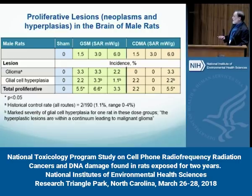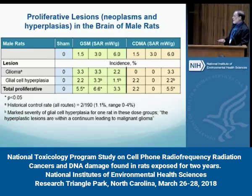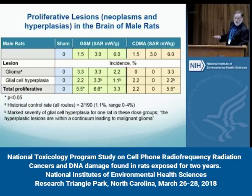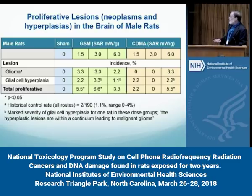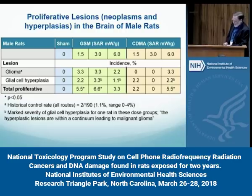The data available for the brain with both GSM and CDMA exposures show that there were gliomas with both exposures. There were also glial cell hyperplasias, which are part of the continuum of the cancer process leading to adenoma and carcinoma. The total proliferative effect with both GSM and CDMA is evidence of a definite target organ effect that should not be ignored. Some of those glial cell hyperplasias were considered to be of high or marked severity — when there's marked severity, these are close to being indicated as a tumor.